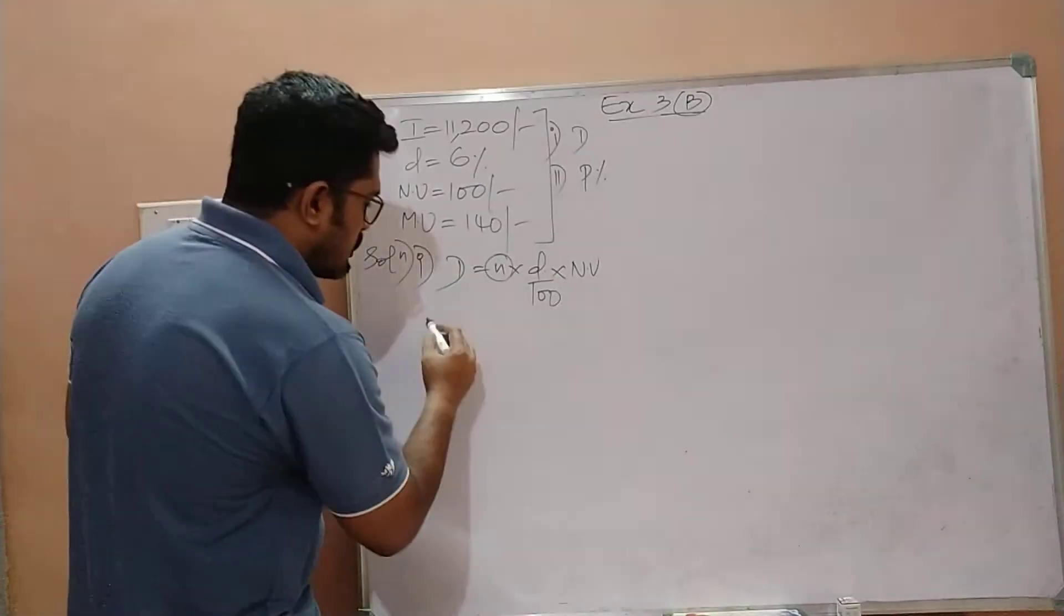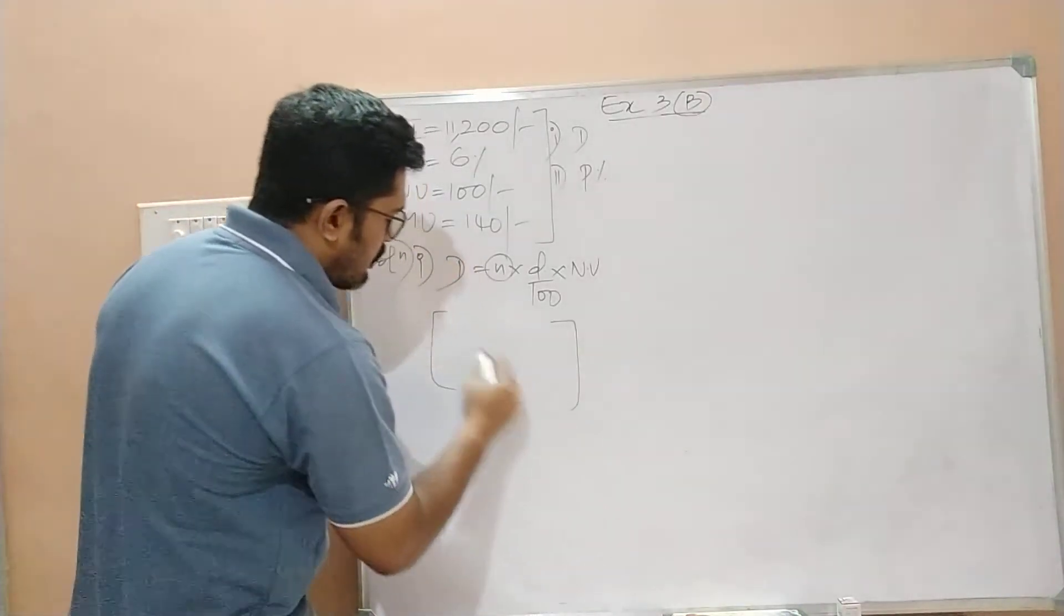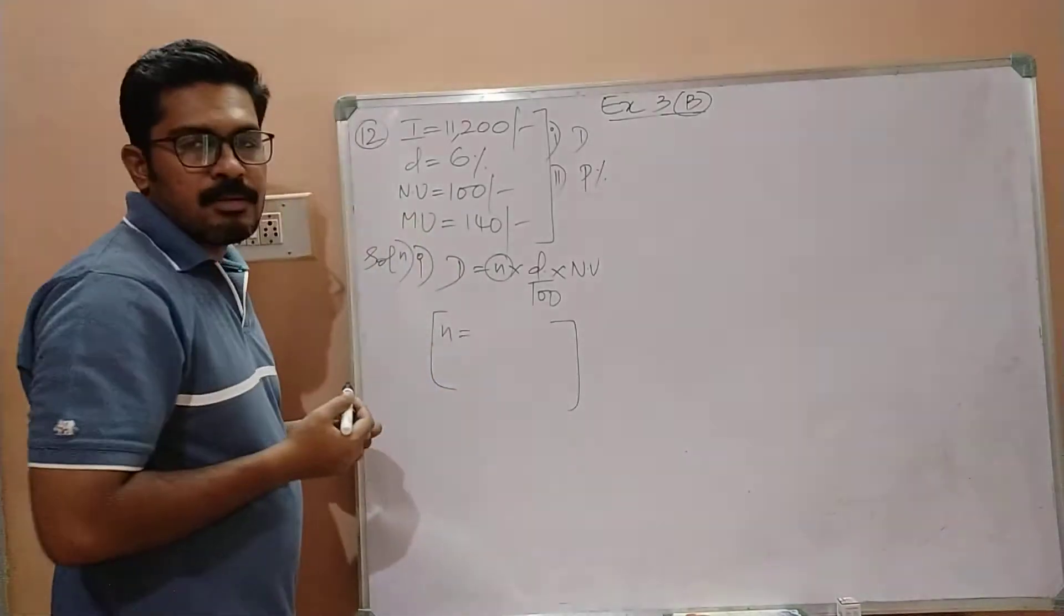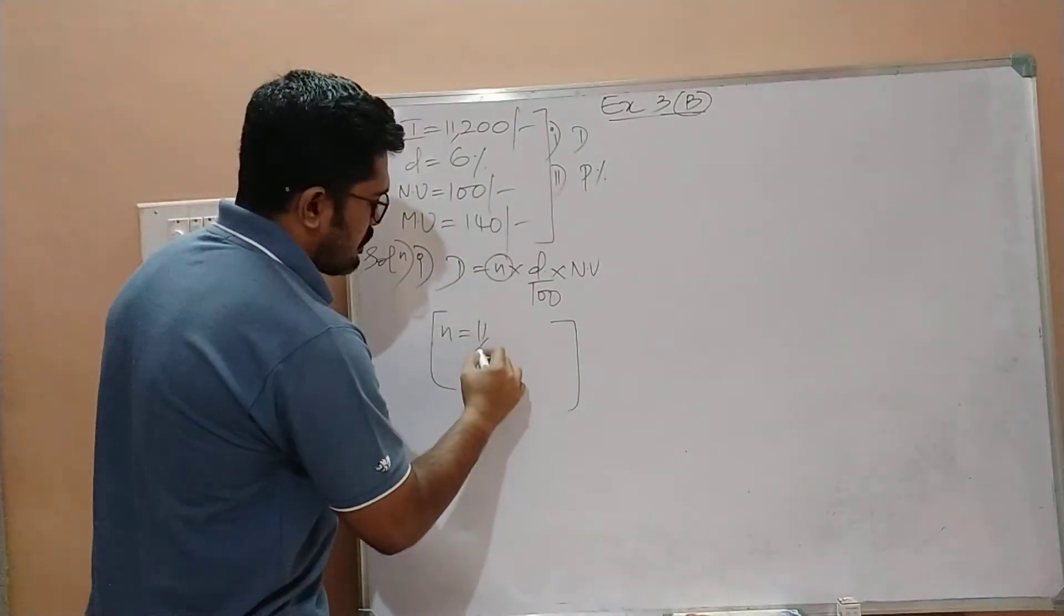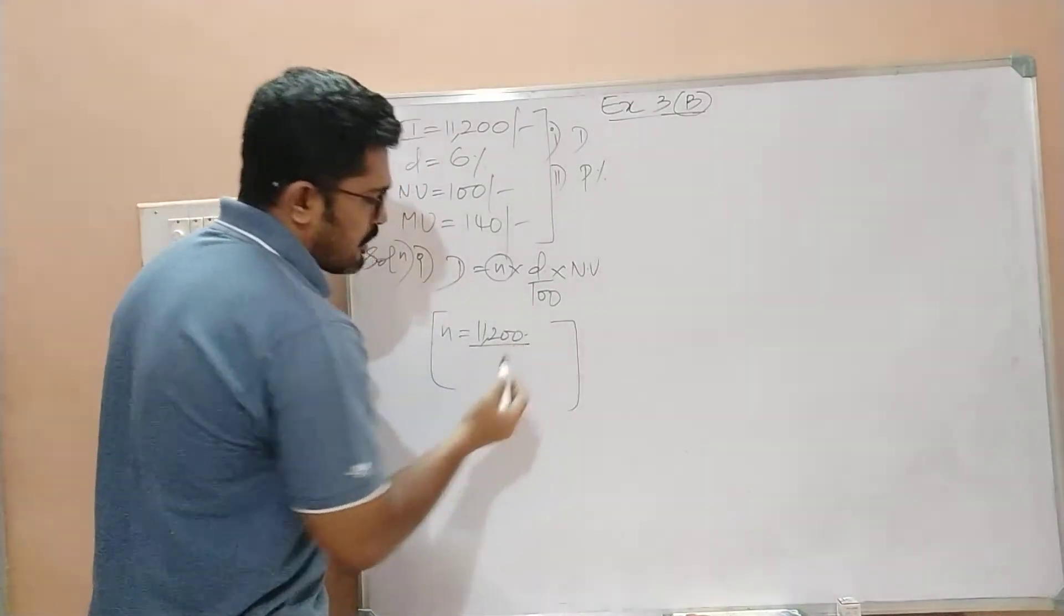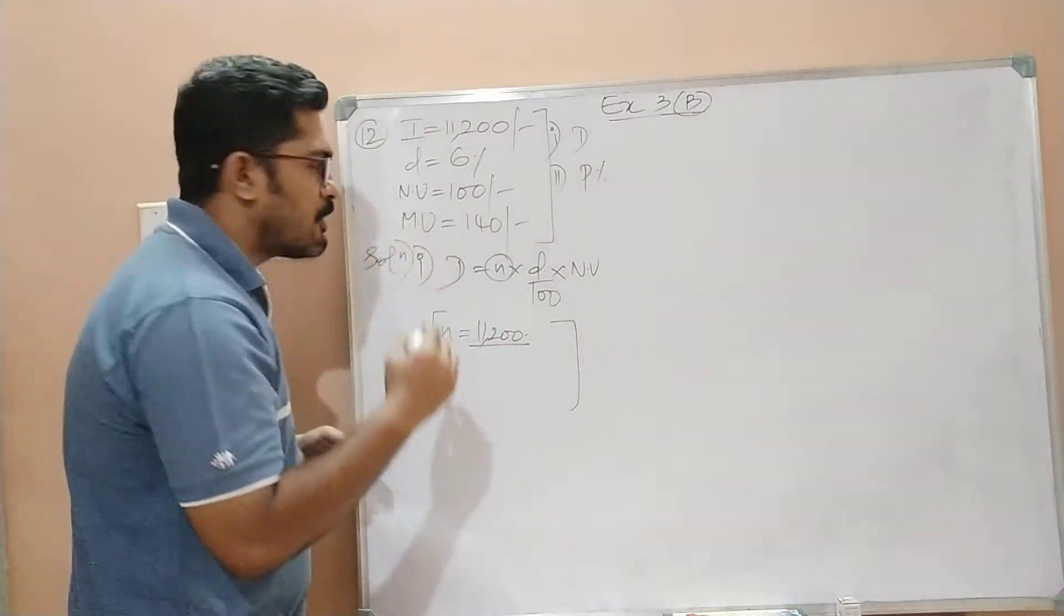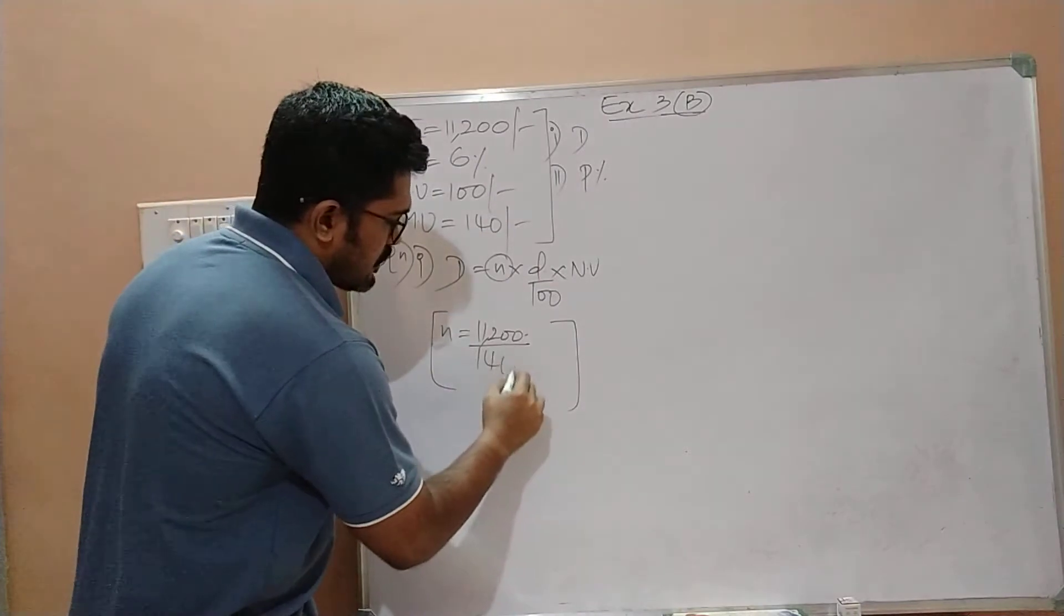How do we find the number of shares that he bought from this company? That will be the total investment that he made, 11,200, divided by the market value of one share, which is 140.